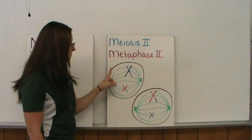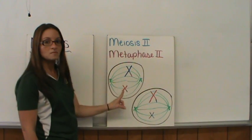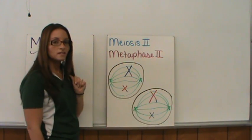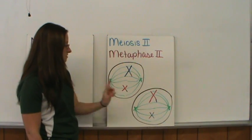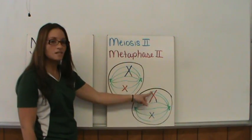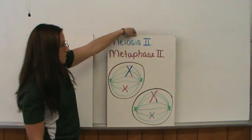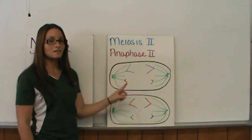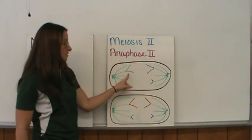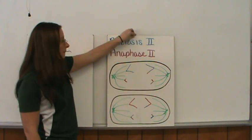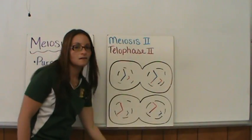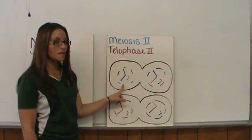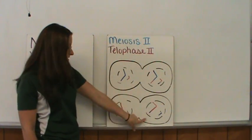From there, the chromosomes line up along the center of the cell with spindle fibers attached — that's metaphase II. In anaphase II, the individual chromatids are pulled to opposite sides. And then finally in telophase II, we end up with a single copy of DNA in each of the four cells.